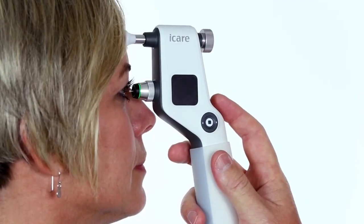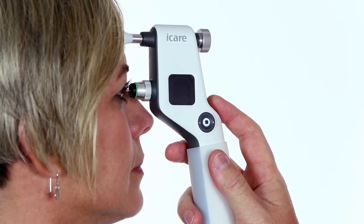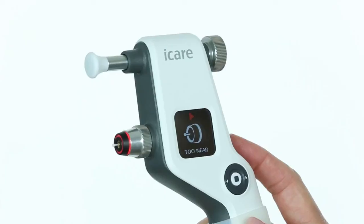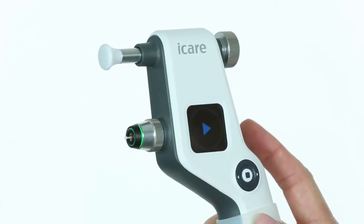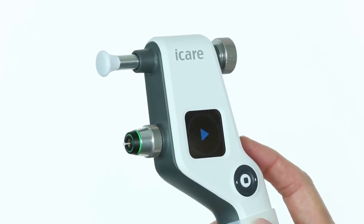Error Messages. For example, if you are too close to the cornea, the too near error message will display and the probe base light flashes red. Clear the error message by pressing the measure button once.